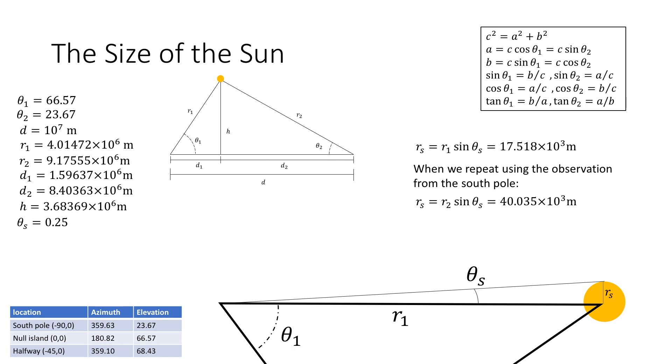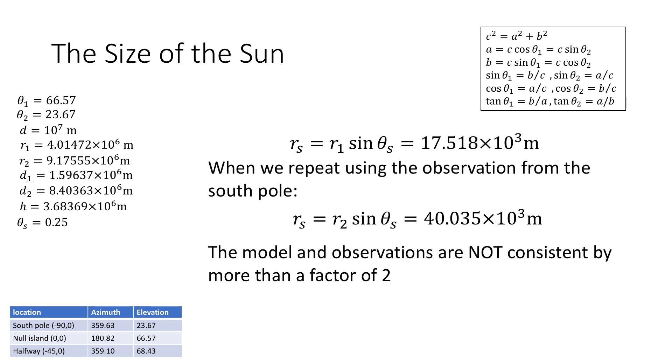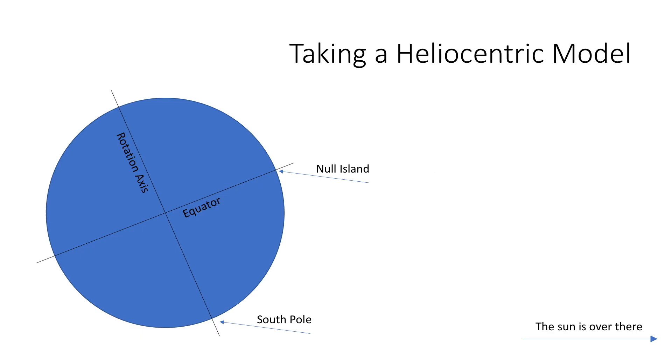But when we repeat this using the observation from the south pole we get a different value. We calculate that the radius of the sun is actually 40 kilometers. This is more than a factor of two difference. So this model is still not consistent.